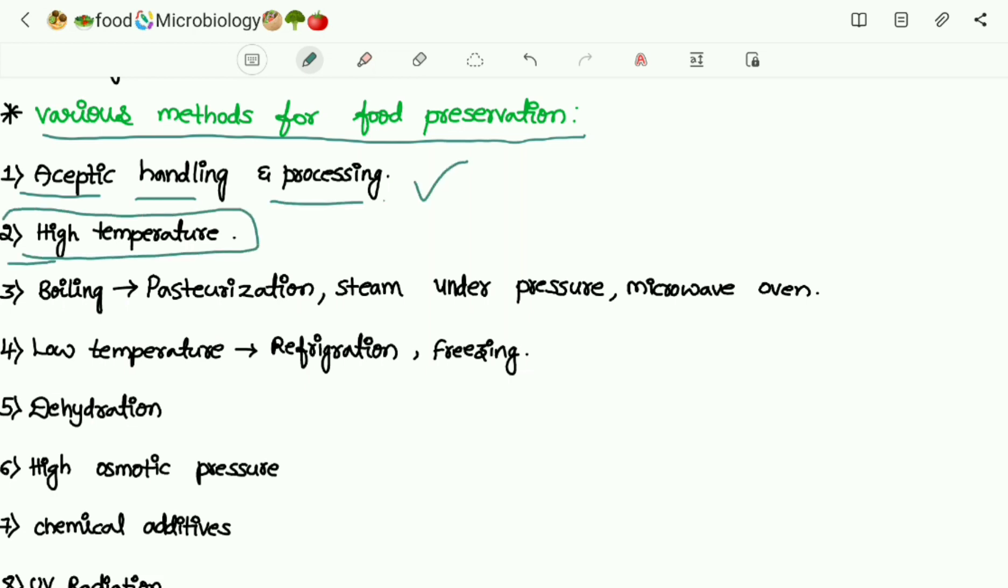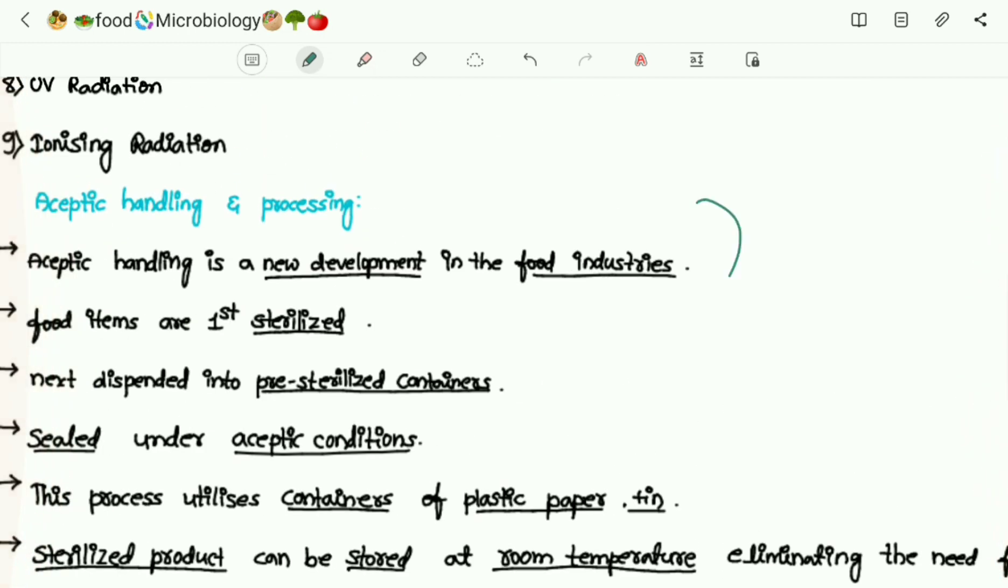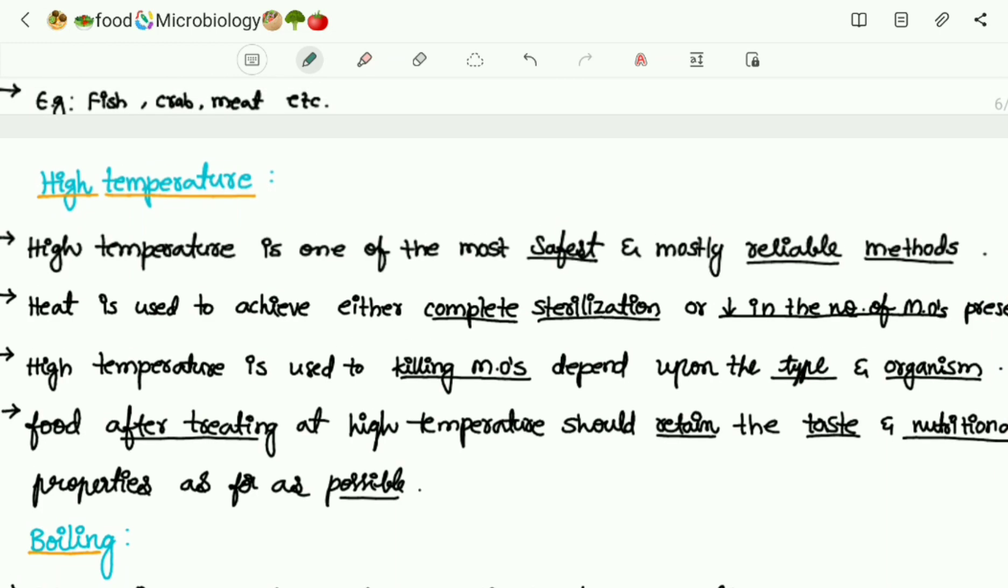We can preserve food via high temperature. This is the aseptic handling and processing that we've already discussed. Now we're going to discuss high temperature food preservation method.